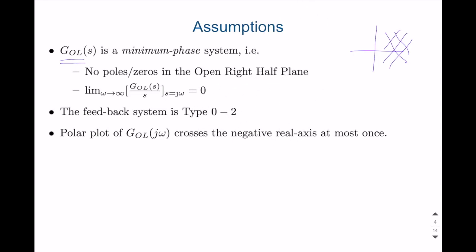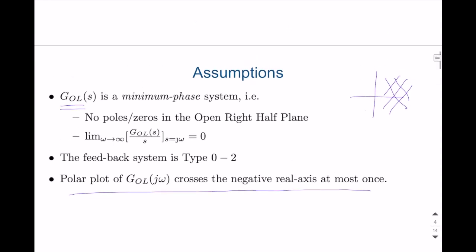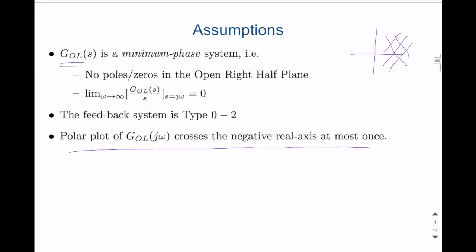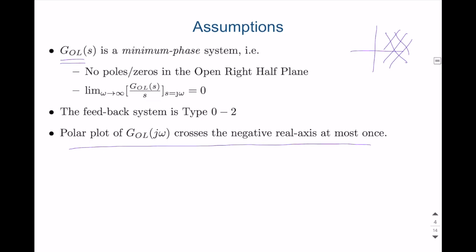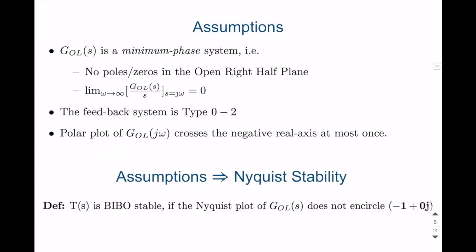So just keep in mind. So once we achieve this, our second assumption is polar plot crosses the negative real axis at most once. Again, these assumptions included are not critical or important for applying Nyquist stability analysis, but it simplifies and it will reduce the Nyquist stability analysis in a simpler form. Under these assumptions, we have this reduced definition. T of S is BIBO stable if the Nyquist plot of GOL, which satisfies this assumption, does not encircle the point minus one plus zero j.